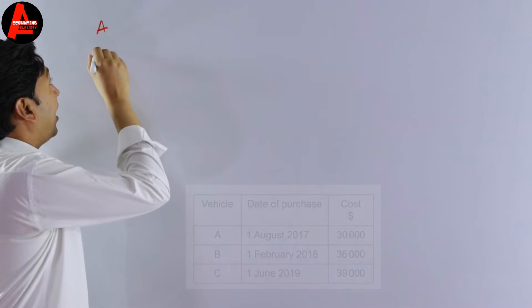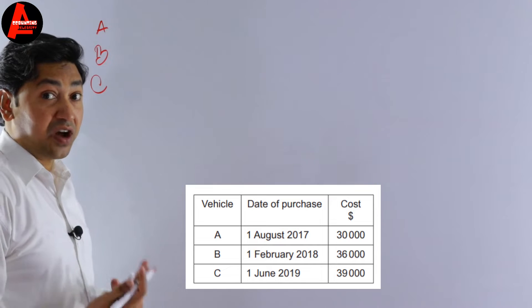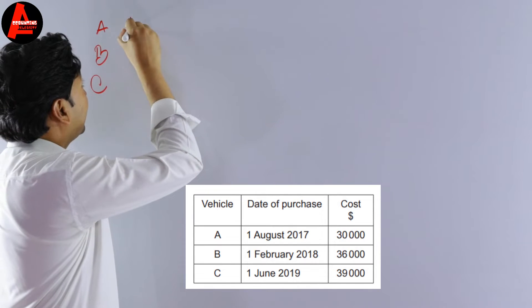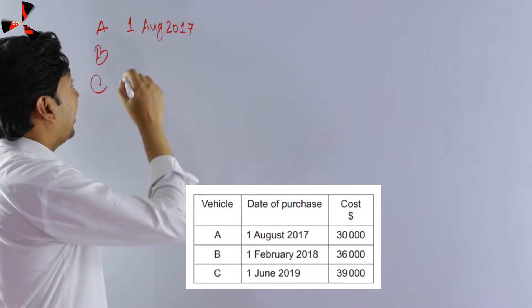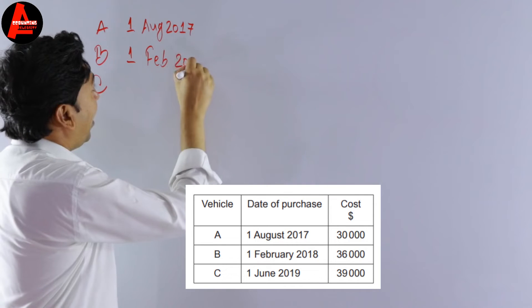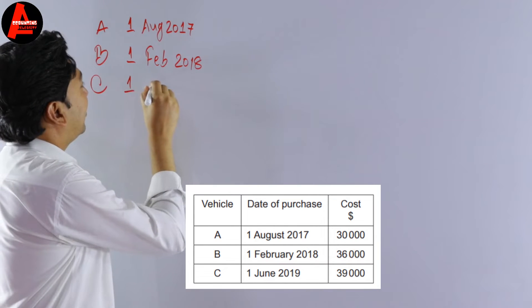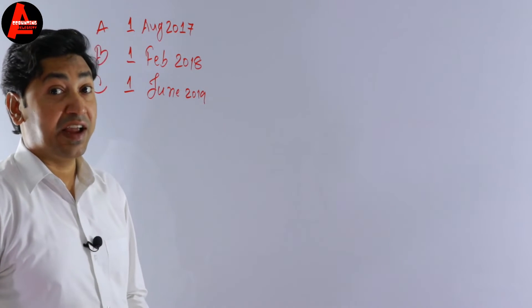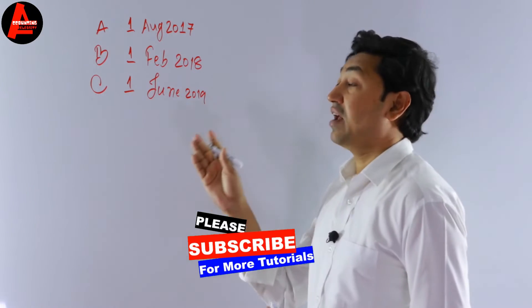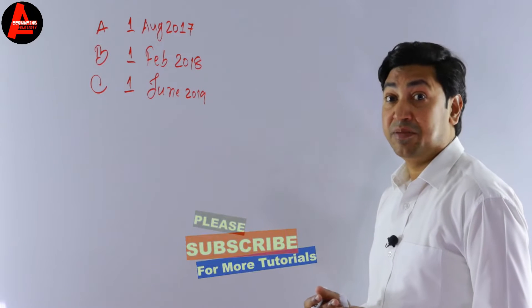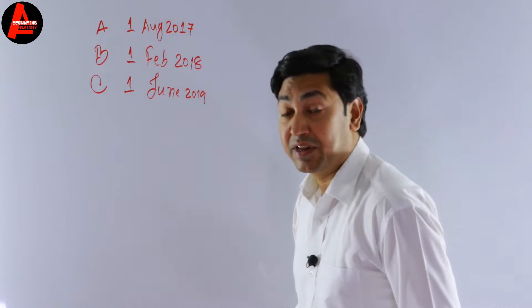Vehicle A is purchased on 1st August 2017. Vehicle B is purchased on 1st February 2018. Vehicle C is purchased on 1st June 2019. The year ending is 31st December 2019, so we calculate depreciation for all three assets up to that date.